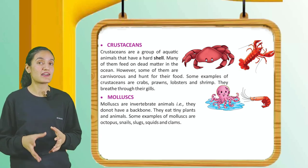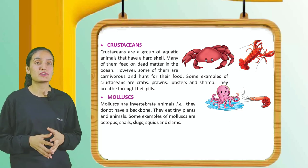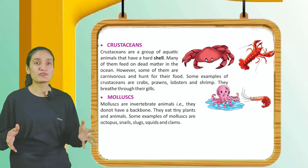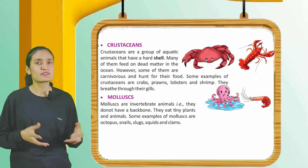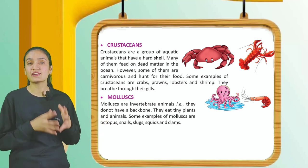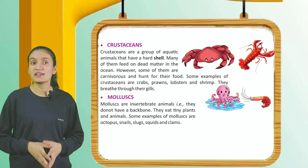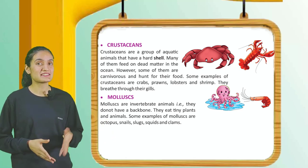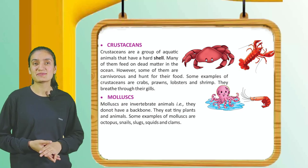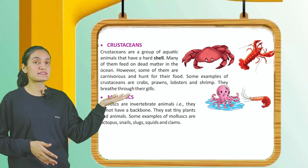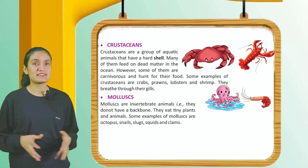Crustaceans: Crustaceans are a group of aquatic animals that have a hard shell. Many of them feed on dead matter in the ocean; however, some are carnivores and hunt for their food. Some examples are crabs, prawns, lobster, and shrimp. They breathe through their gills.